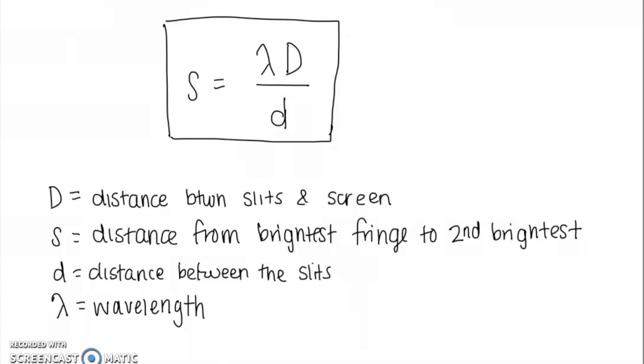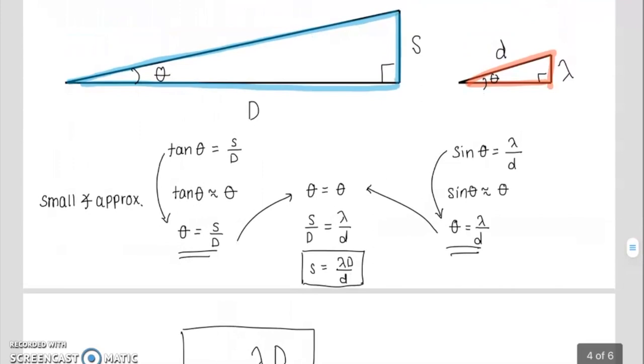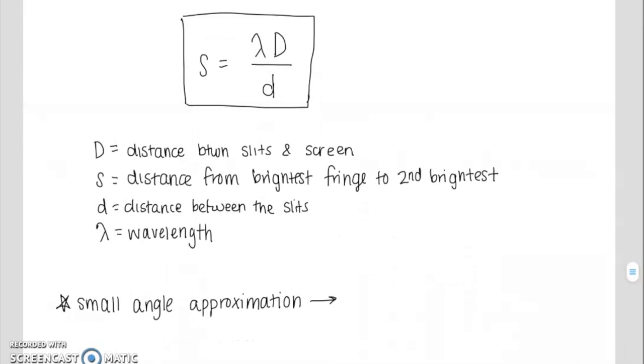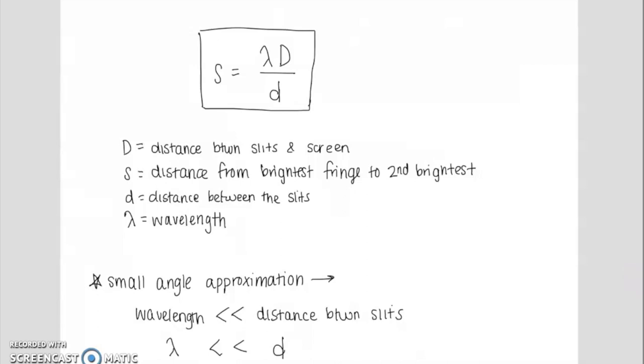Now one really important thing to notice is that we did make that approximation, the small angle approximation. So this equation will only work if our theta that we used in our derivation is indeed really, really small. And in order to accomplish a small enough angle, this means that our wavelength must be much, much smaller than the distance between the slits. Or in terms of our variable, our lambda needs to be much, much smaller than lowercase d. So this is really important to keep in mind that you will only be able to apply this equation if wavelength is much, much less than the distance between the slits.